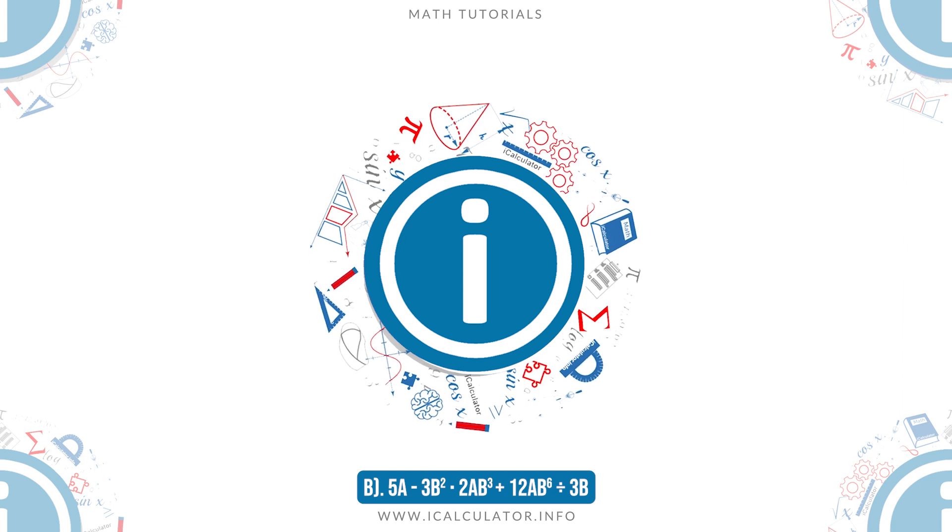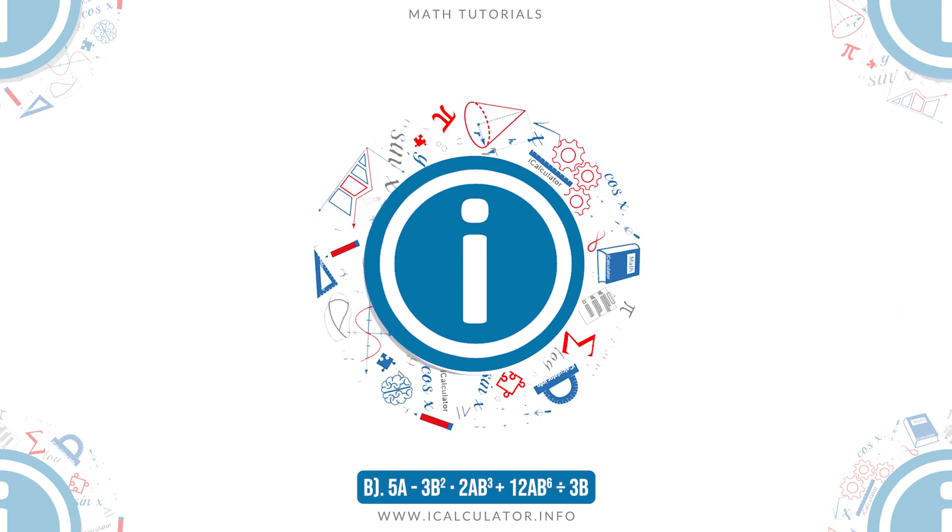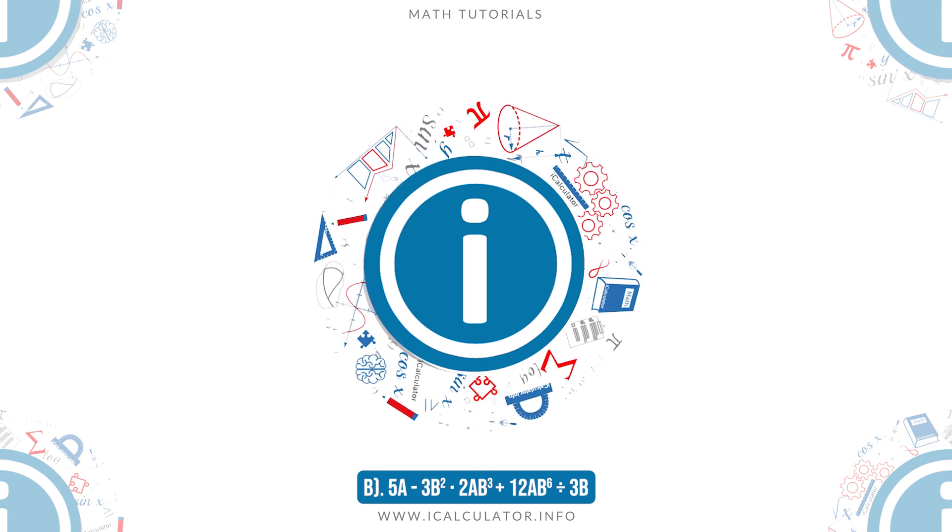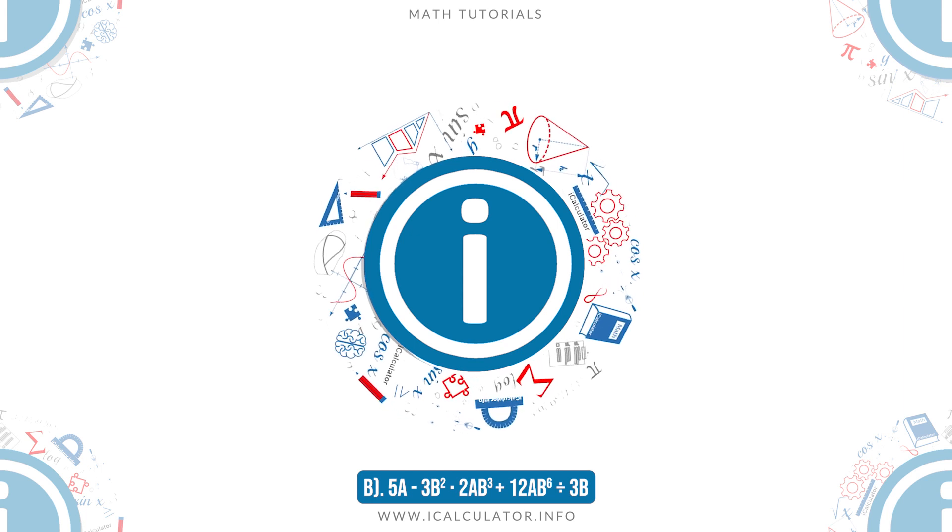B: 5a minus 3b² times 2ab³ plus 12ab⁶ divided by 3b.